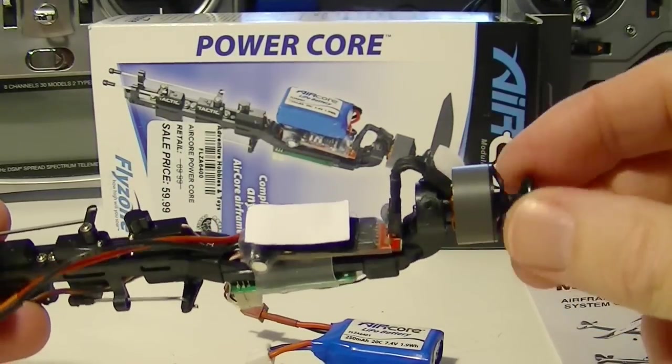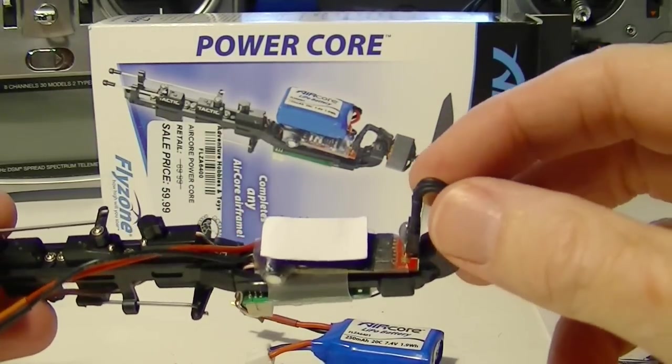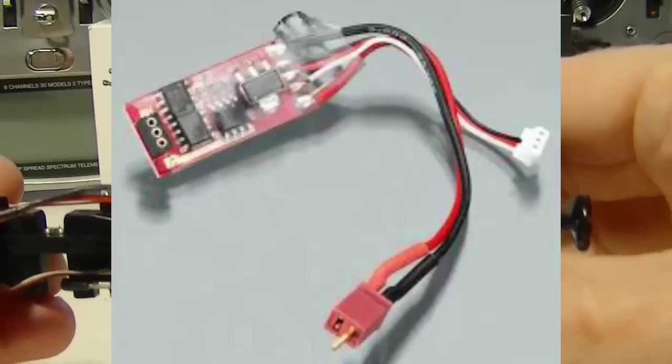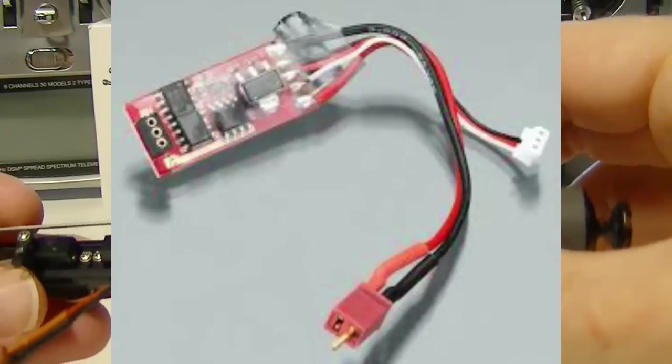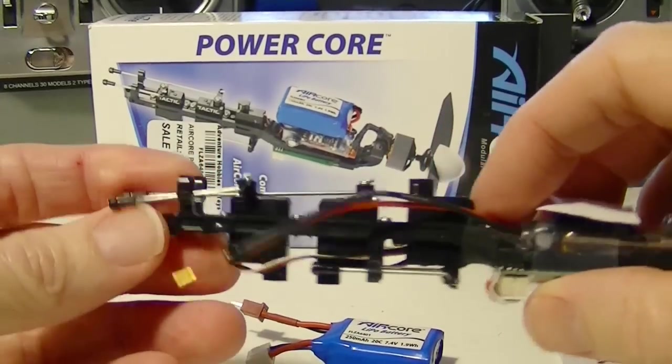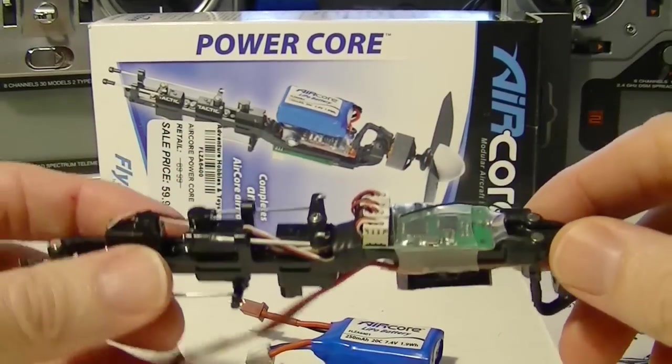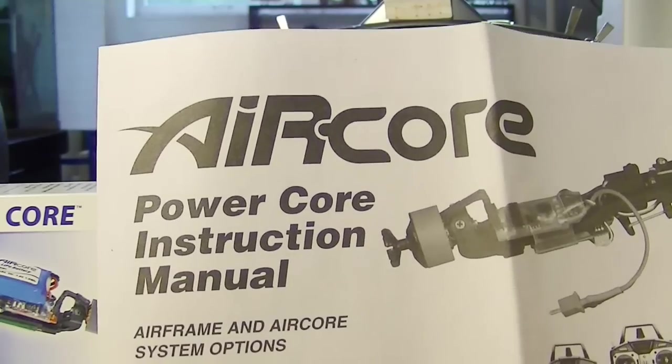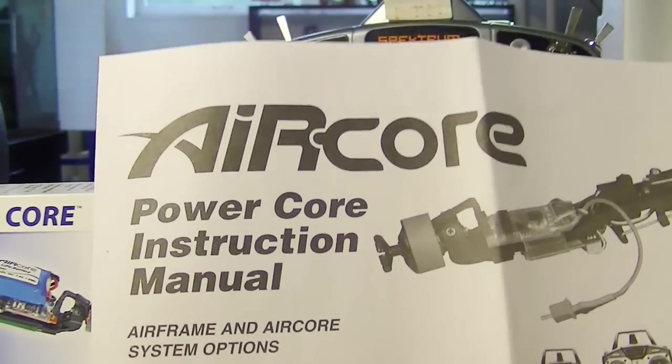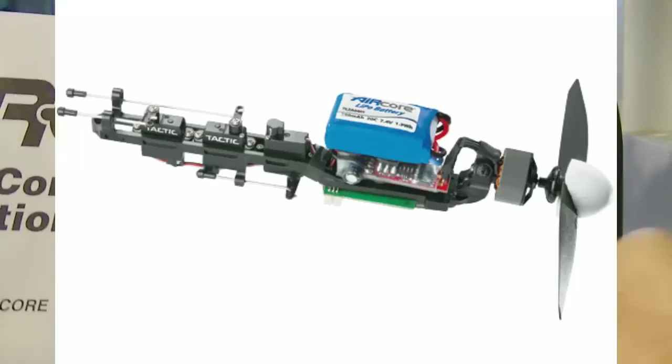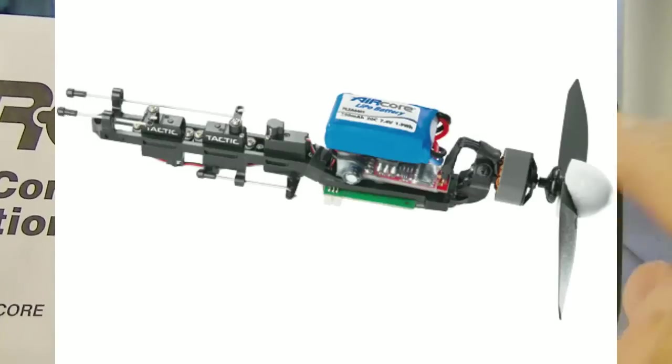It's got a brushless motor on the front which plugs into a brushless ESC electronic speed control, three servos here, and on the bottom it's got the Tactic four-channel receiver. Here's the instruction manual that came with the Power Core. The idea behind this is the Power Core can be inserted into various models of planes that Flyzone makes.